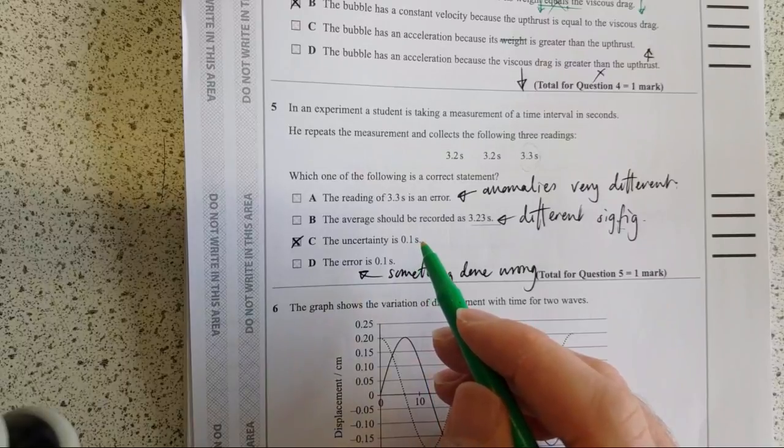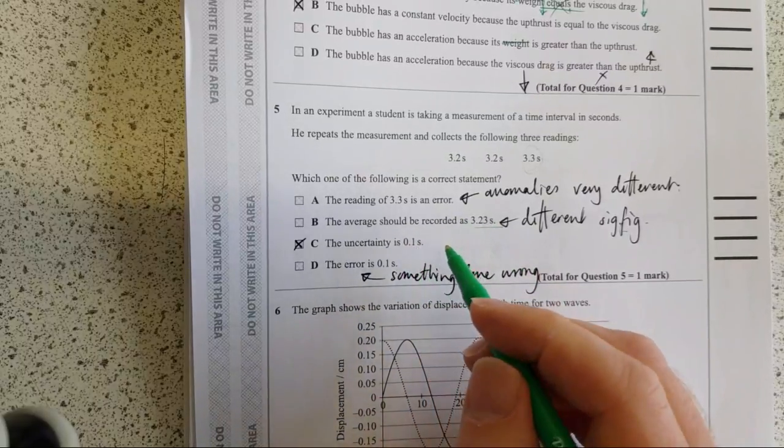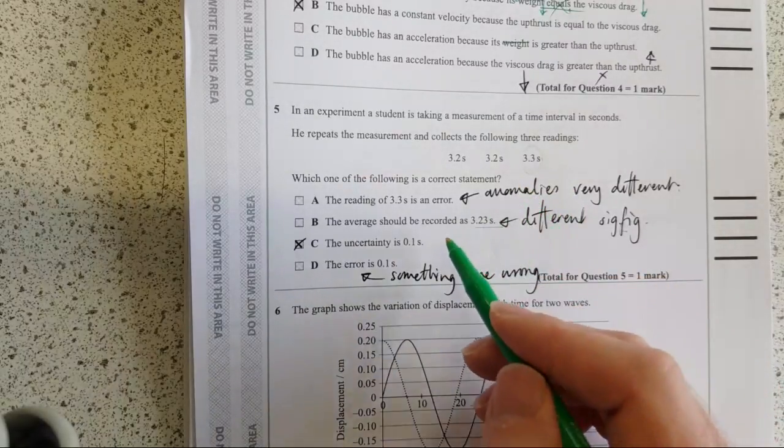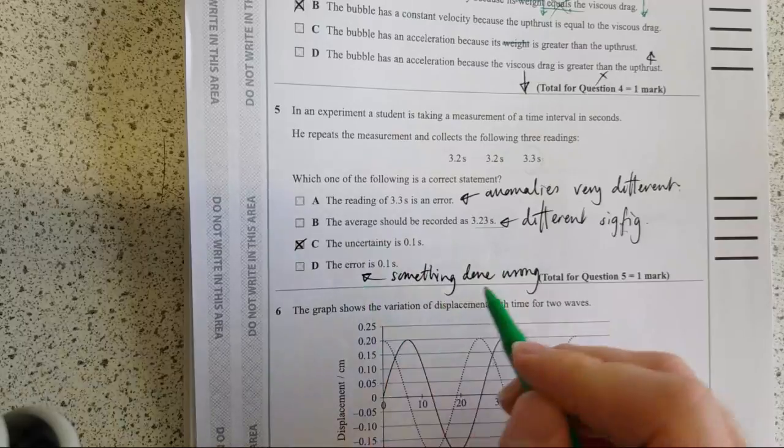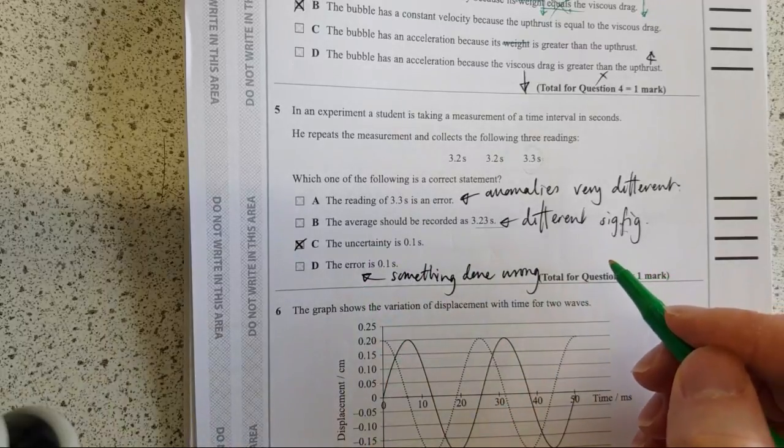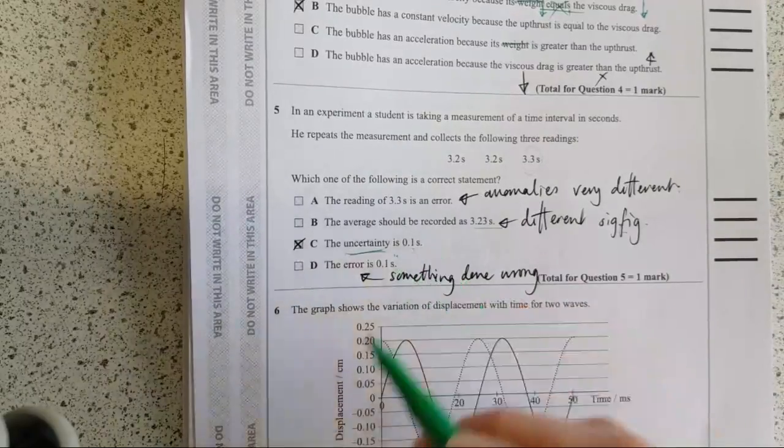I would normally say the uncertainty is half the range rather than the range, but that's fine. The error is 0.1. Error implies you've done something wrong rather than you've actually, you're just not completely sure. So it's this one, uncertainty.